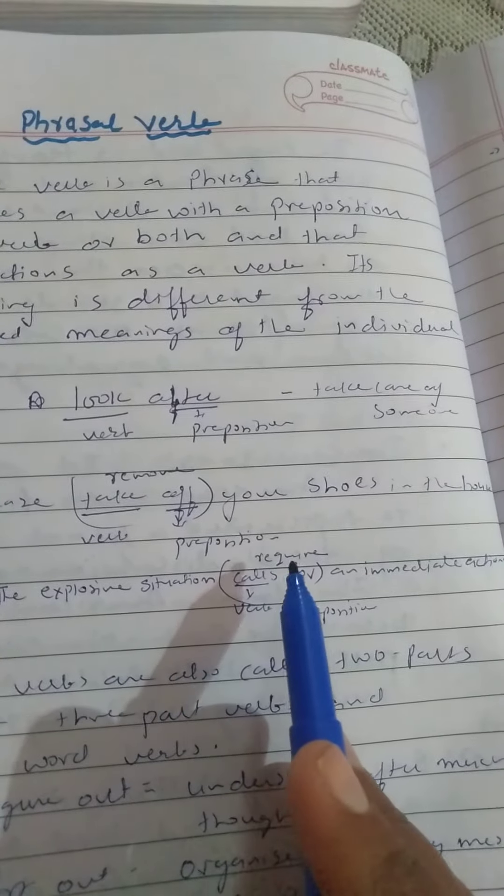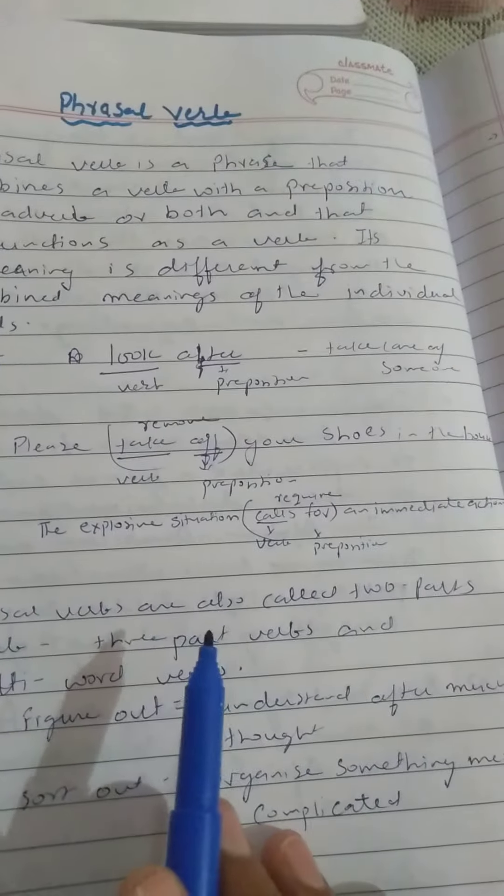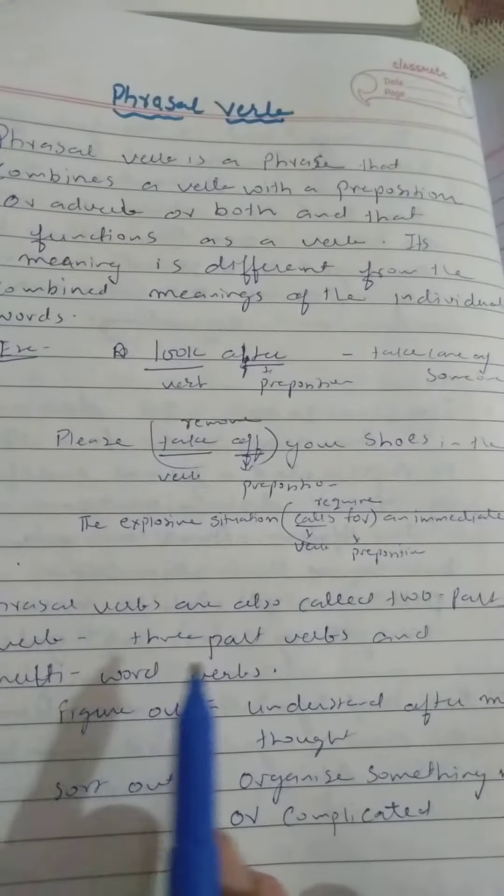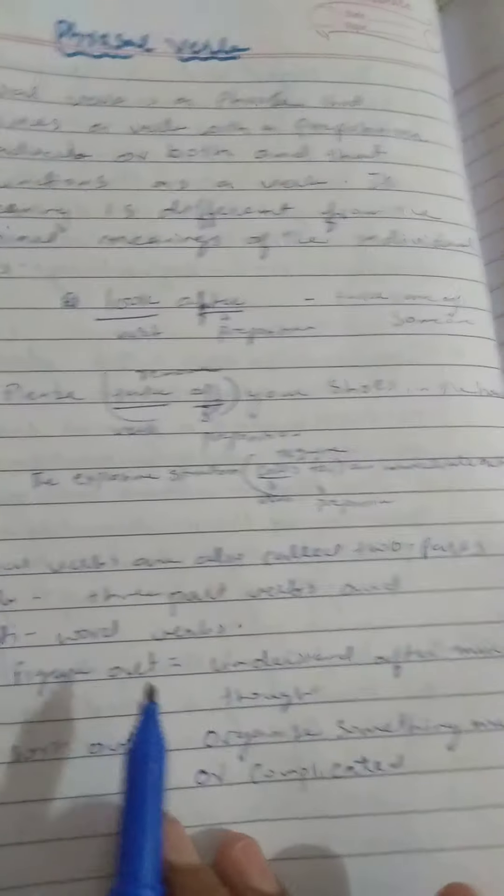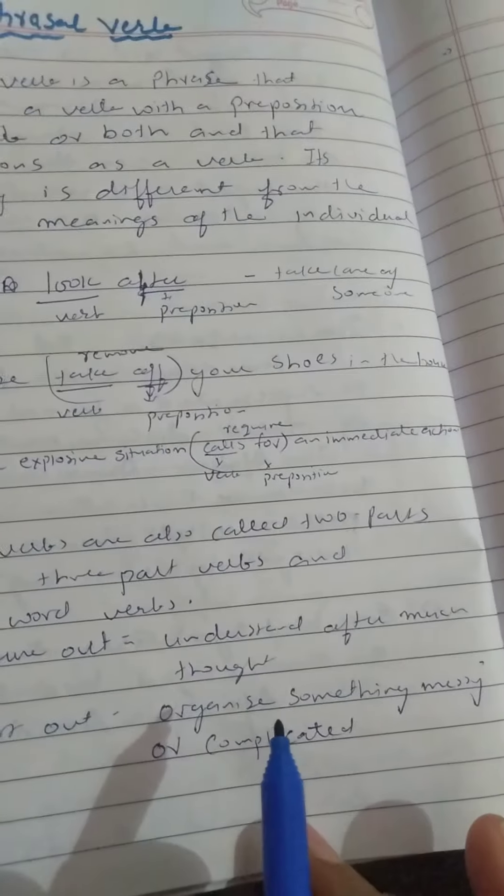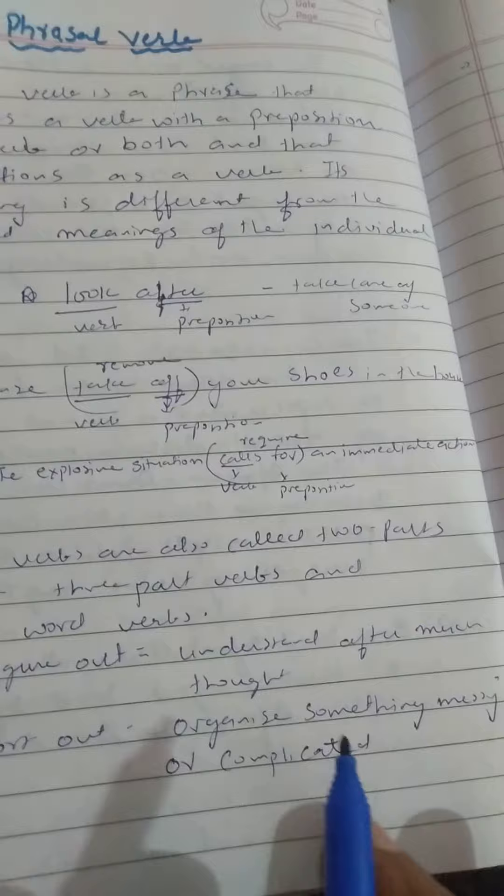When we combine these two, we get the new meaning—require. So phrasal verbs are also called two-part verbs, three-part verbs, and multi-word verbs. Figure out—understand after much thought. Sort out—organize something messy or complicated.